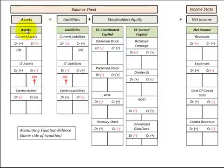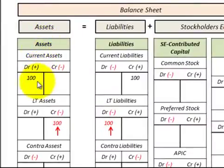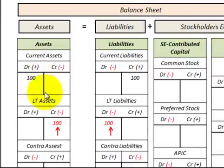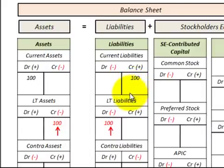Now let's look at changes on the same side of the accounting equation. Say we have an increase in assets — a debit of $100 — and the offsetting entry is a credit of another asset by $100. They offset each other, so the accounting equation stays in balance with no net change in assets. Same thing with liabilities: say we had a credit increase of $100, then a debit decrease of $100 in another liability as the offsetting entry. They cancel each other out — no net change in liabilities — so the accounting equation remains in balance.